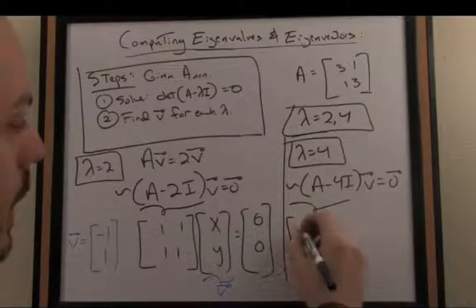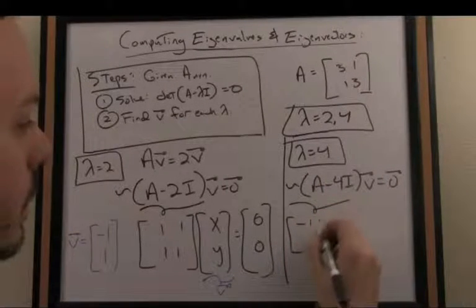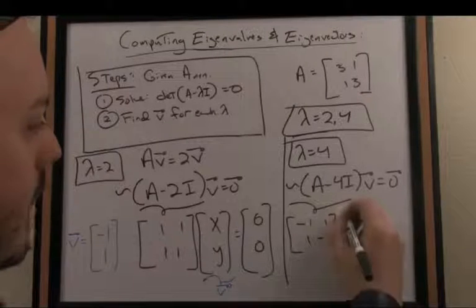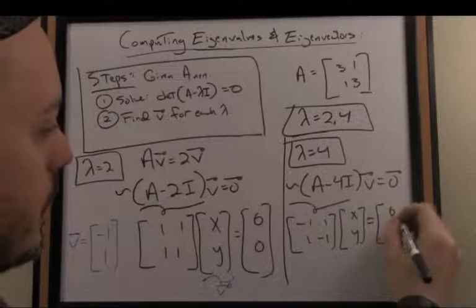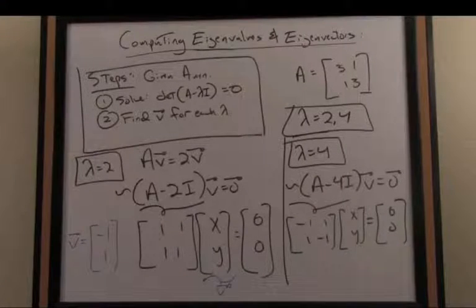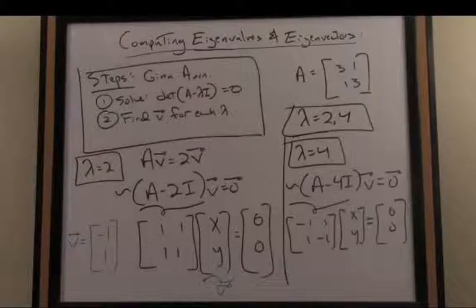So what do we have here? We have negative 1, 1, 1, negative 1 times my eigenvector, let's say v, x, y, equals 0, 0. So we want a v here that satisfies that matrix equation.